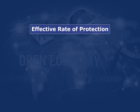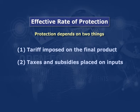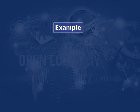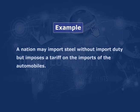Now let us understand the effective rate of protection. A nation can impose a tariff on imports of inputs and imports of the final commodity. To protect domestic industries from foreign industries, a nation often imposes a lower tariff on imports of inputs than on imports of the final commodity. Protection depends on two things: the tariff imposed on the final product, and the taxes and subsidies placed on the inputs. For example, a nation may import steel without import duty but impose a tariff on imports of automobiles. Nominal tariff rate cannot measure the degree of protection because protection depends on nominal tariff rates imposed on both the final commodity and inputs.